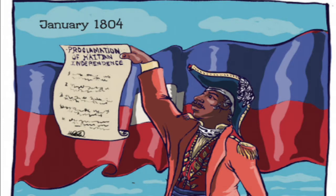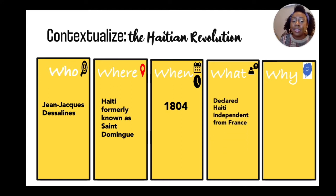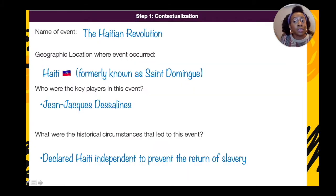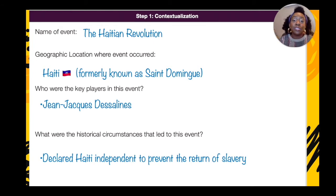Our last example. Who: Jean-Jacques Dessalines. Where: Haiti, formerly known as Saint-Domingue. When: 1804. What: declared Haiti independent from France. Why: to prevent slavery from returning to Haiti. Same for the name of event and geographic location. Who are the key players? Jean-Jacques Dessalines. What were the historical circumstances? Declared Haiti independent to prevent slavery from returning to the island.